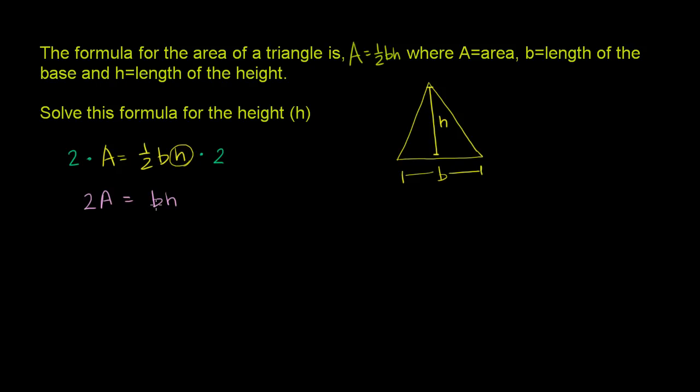And we're almost there. We have a b multiplying by an h. If we want to just isolate the h, we could divide both sides of this equation by b. We're just dividing both sides. You could almost view b as the coefficient on the h. We're just dividing both sides by b. And then what do we get? Well the right hand side, the b's cancel out, and the left hand side, we're just left with 2A over b.